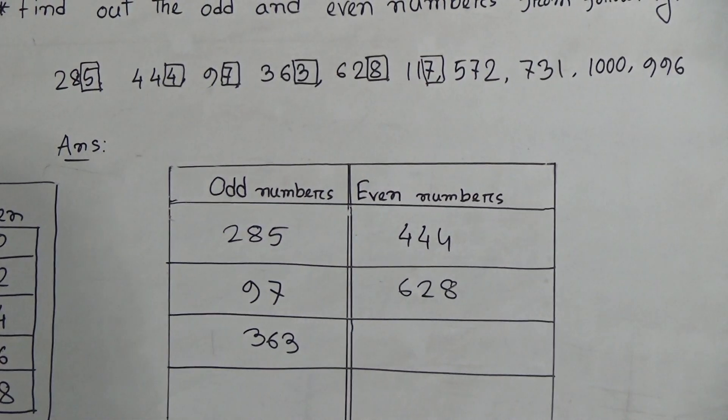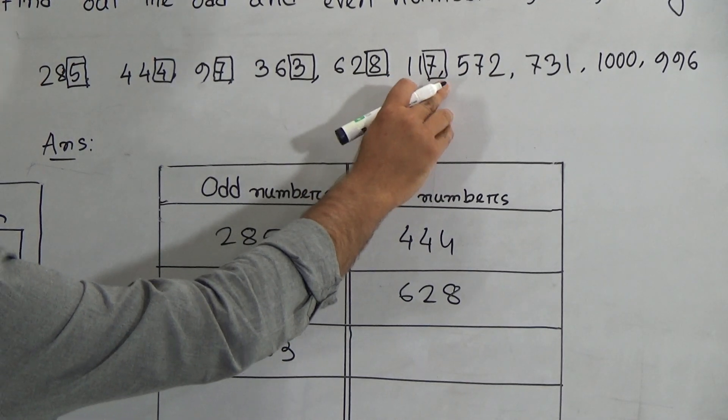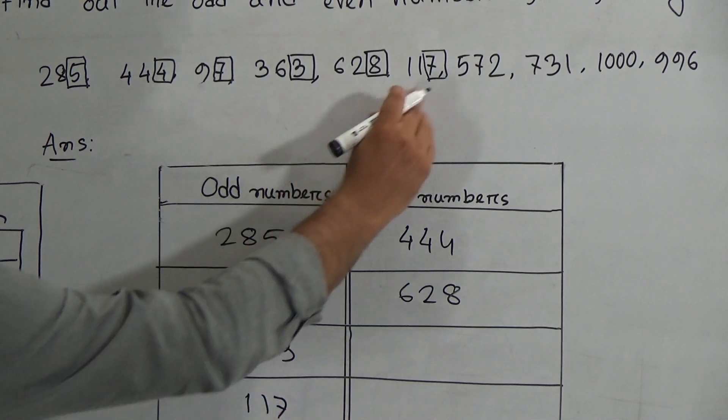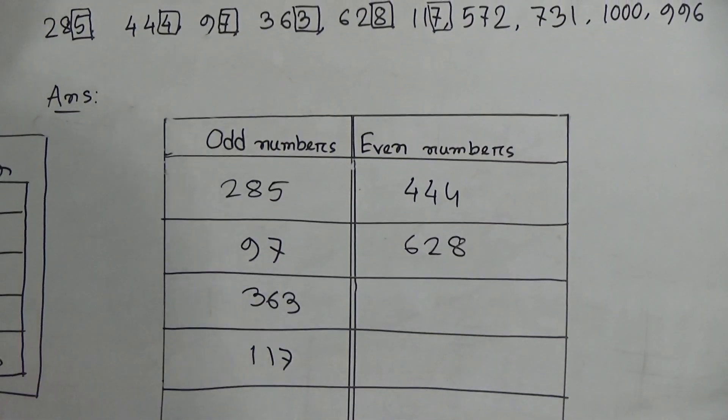117. 7 is the symbol of an odd number, and it is the last digit of this number, so 117 is an odd number.